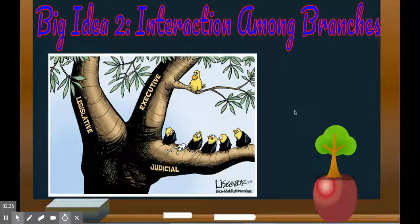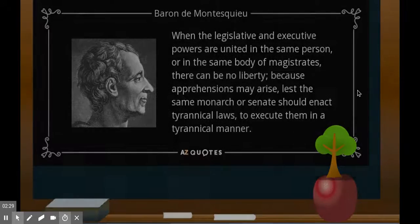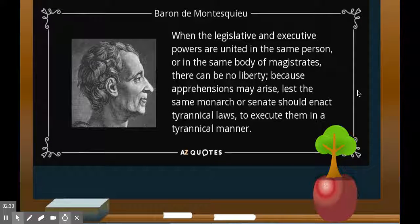So here's Baron de Montesquieu — he was the original French philosopher who talked about the three branches of government, so we give him a shout out. But it's really Madison's Federalist 51 paper that will drive that idea home.